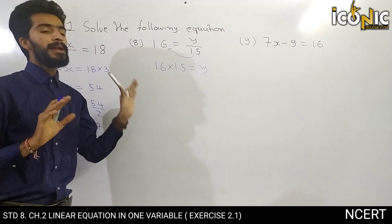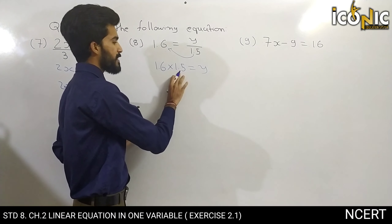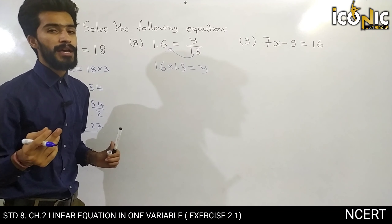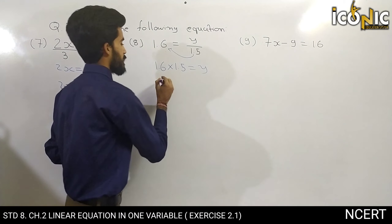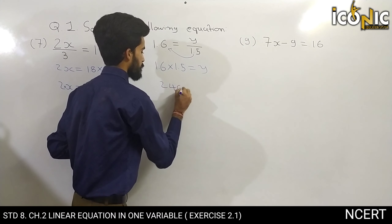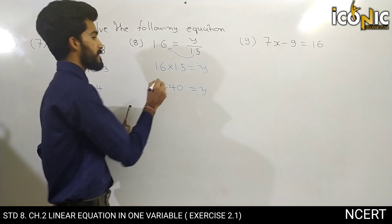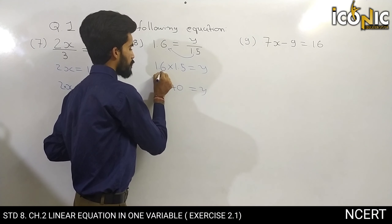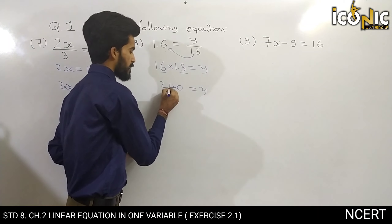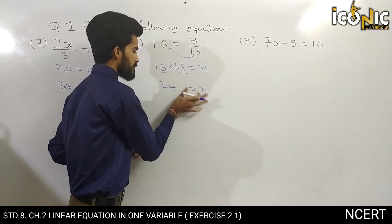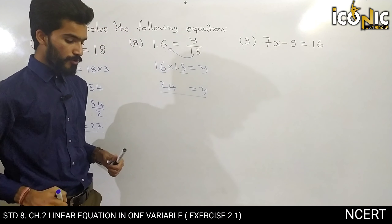Multiply 15 by 16, ignoring the decimal for now. 15 squared is 225, plus 15 equals 240. But we had decimals — one decimal place each side, so two decimal places total — meaning we place the point two digits from the right: the answer is 2.4. So y is equal to 2.4.